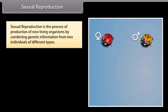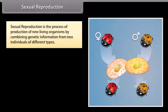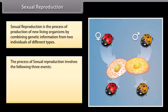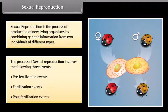Sexual reproduction is the process of production of new living organisms by combining genetic information from two individuals of different types. The process of sexual reproduction involves the following three events: pre-fertilization events, fertilization events, and post-fertilization events.